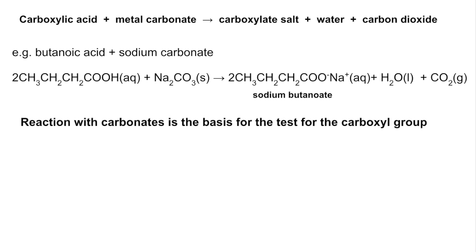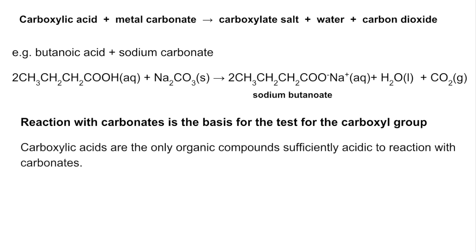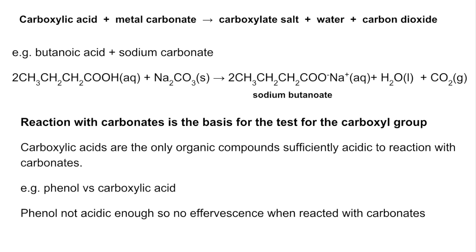The reaction with carbonates is the basis for the test for the carboxyl group. Carboxylic acids are essentially the only organic compounds acidic enough to react with carbonates, so if you add a carbonate to a carboxylic acid you'll see effervescence. This is also useful for distinguishing between phenols and carboxylic acids — both are acidic, but phenols aren't sufficiently acidic, so you don't get effervescence when a phenol reacts with a carbonate, whereas you do with a carboxylic acid.